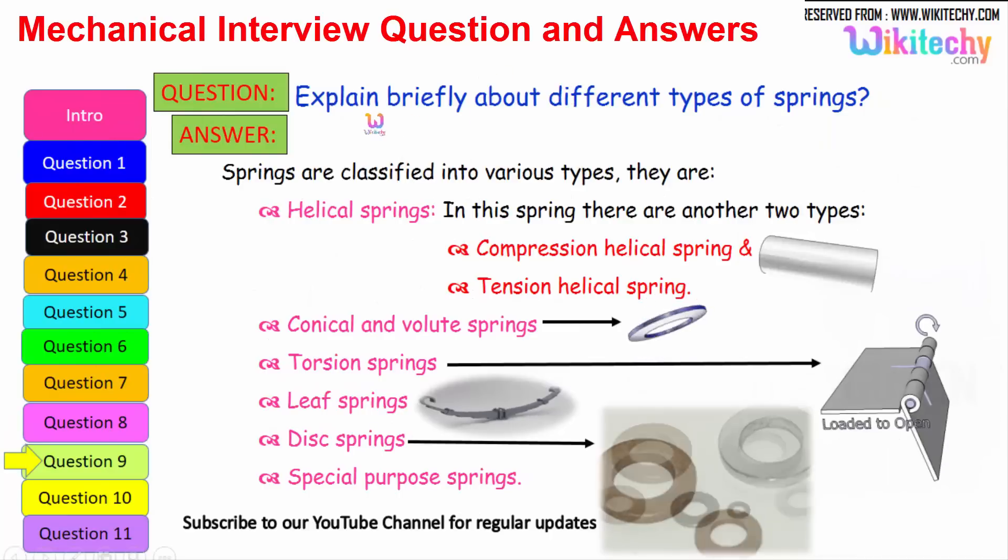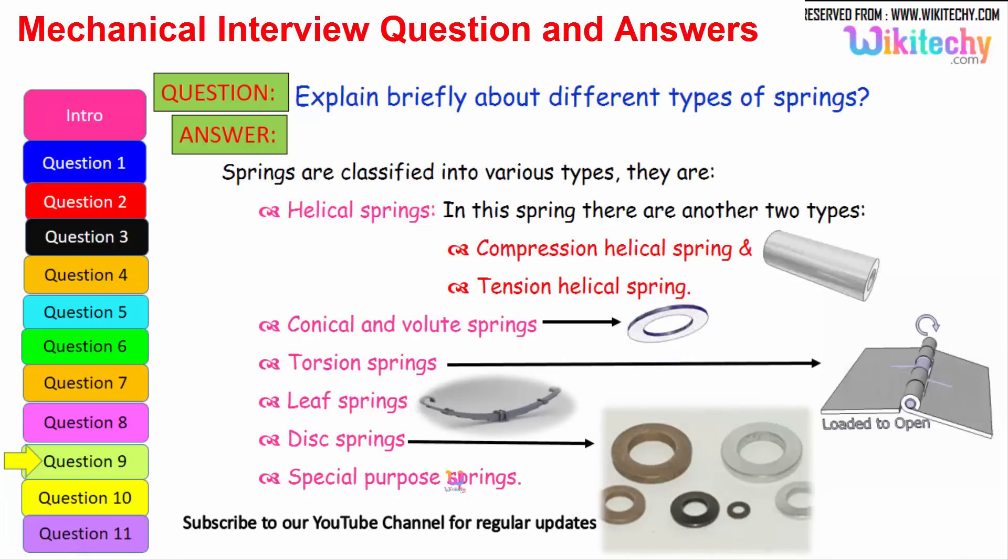Now let us see briefly about the different types of springs. Springs are classified into various types. The first one is helical springs. In the springs there are two types further: compression helical spring and tension helical spring. And the next one is conical volute springs. The other one is torsion springs. Here is the leaf springs. Here is the disk springs. And there are some additional springs which are called special purpose springs. These are all different types of springs available.